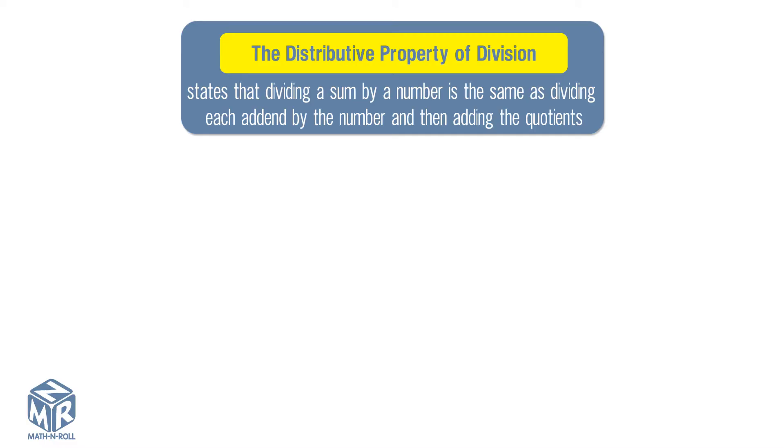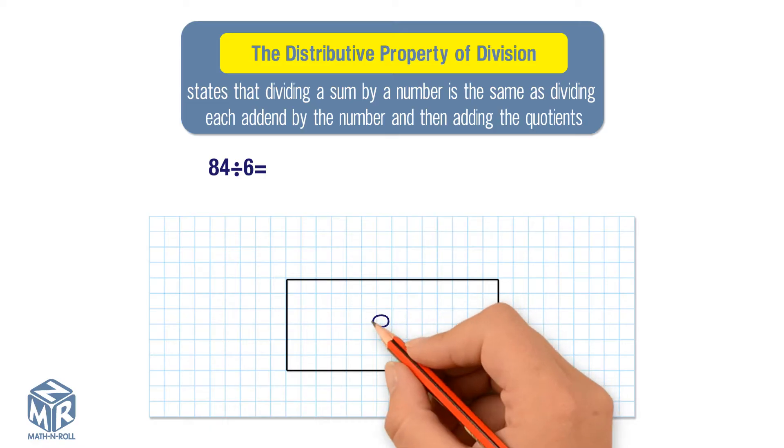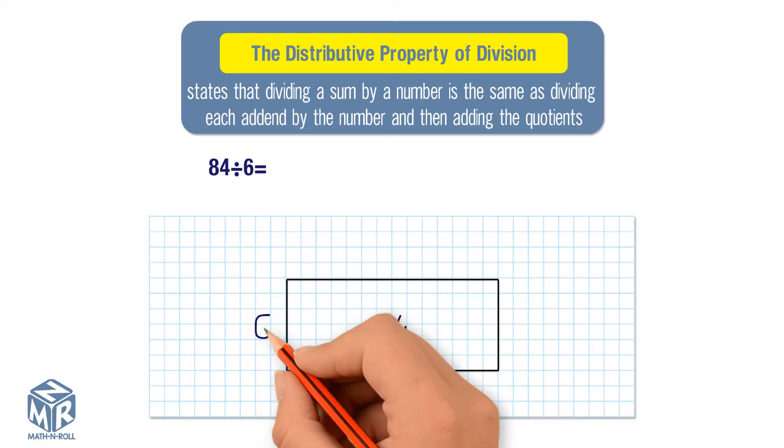Let's take a look at an example. 84 divided by 6. Let's make a rectangular model. Put the dividend inside the rectangle and the divisor on the left side.